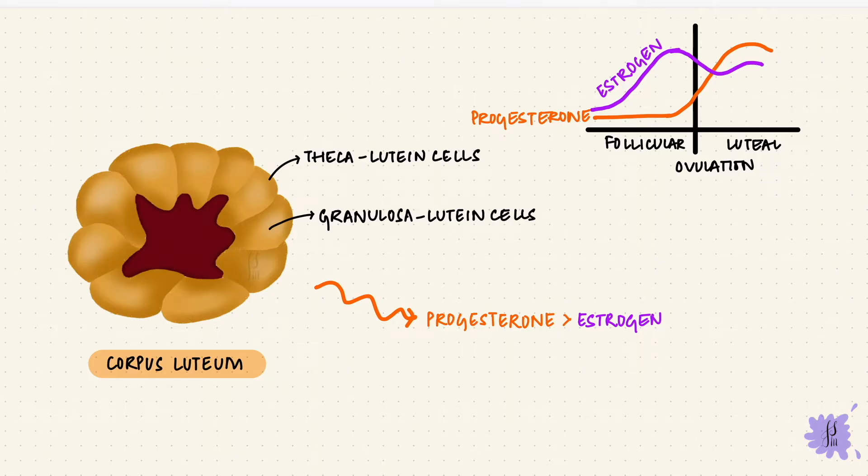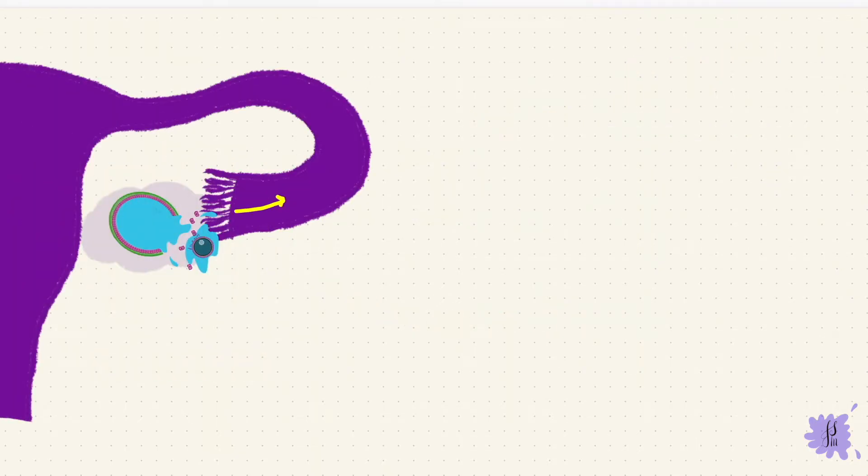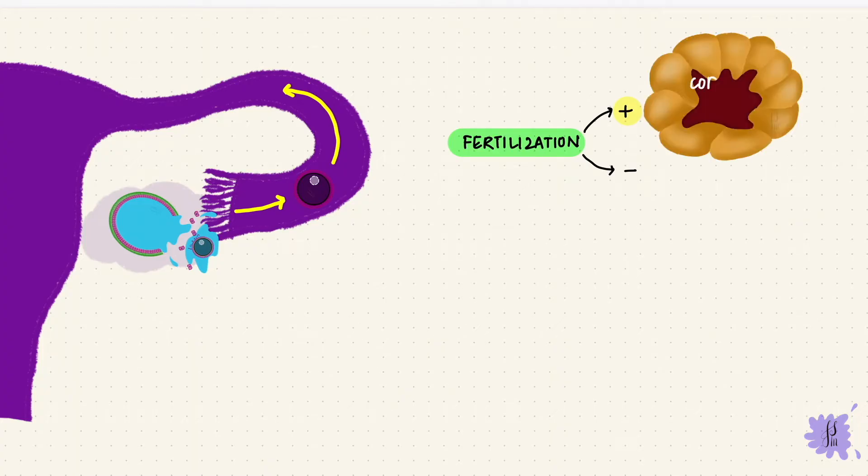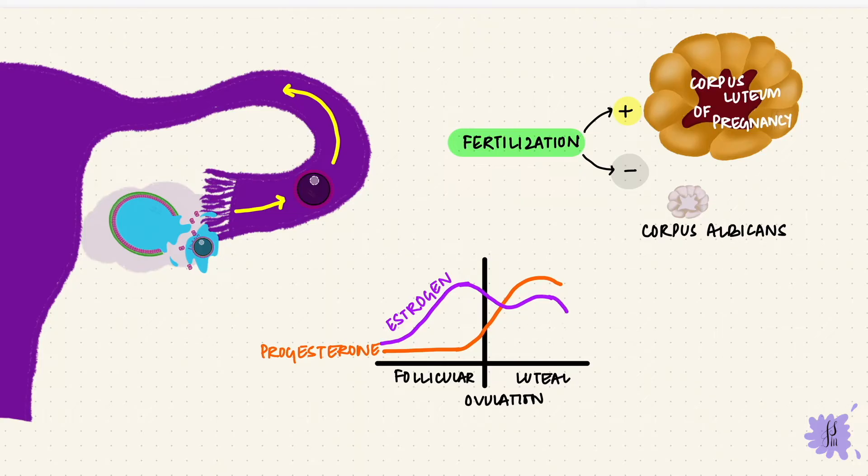The fate of the corpus luteum depends upon what happens to that oocyte that was released at ovulation. Does it get fertilized or not? If fertilization happens, then the corpus luteum would continue to grow and become the corpus luteum of pregnancy, maintaining the progesterone until the placenta takes over. If there's no fertilization, it'll grow for a while and then degenerate. It loses the yellow color and becomes a white scar called the corpus albicans. The estrogen and progesterone levels fall because it loses its secretory function.